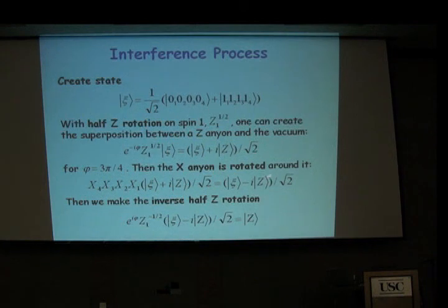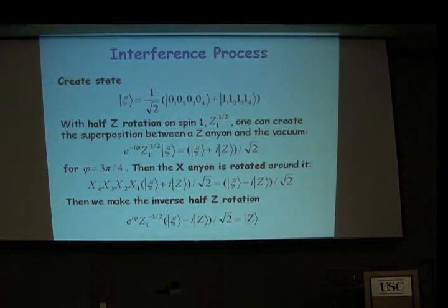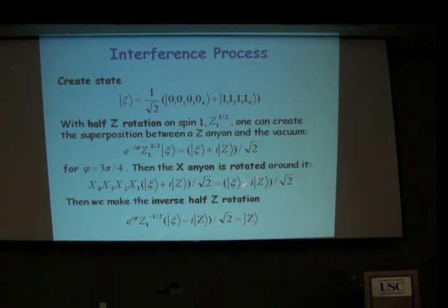If there wasn't a minus sign, the final state would go into the vacuum. So distinguishing between the vacuum and the anyonic state at this final step tells you if you had the minus sign produced by the braiding — if you had anyonic statistics or not.